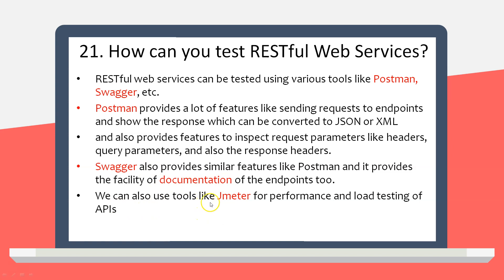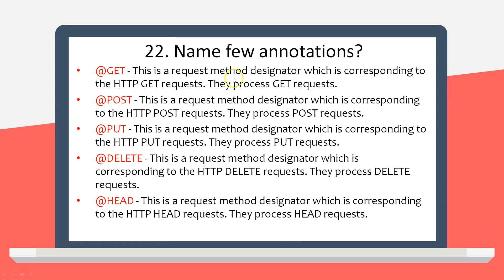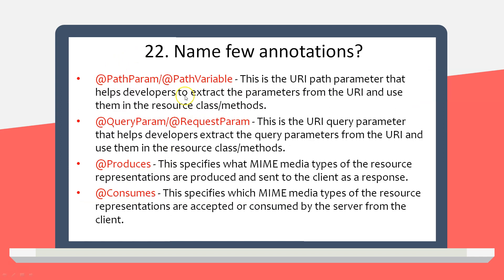Next question: can you name a few REST annotations? So far we have discussed GET, POST, PUT, DELETE. There are many more annotations that REST API provides — for example, @PathVariable or @PathParam, which is used to extract a parameter from the URI, and @QueryParam or @RequestParam, which is used to extract query parameters from the URI.